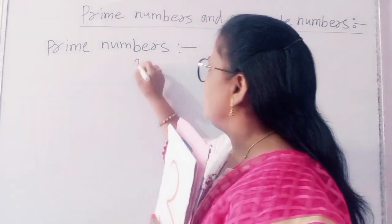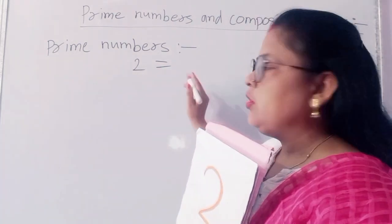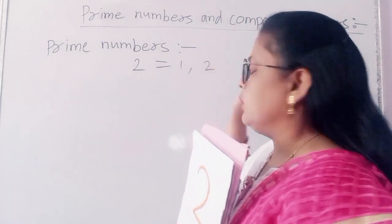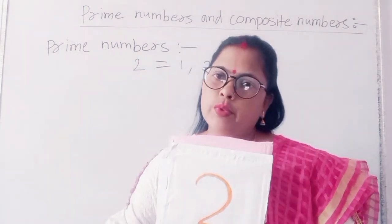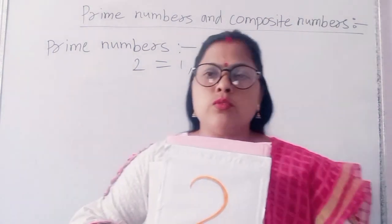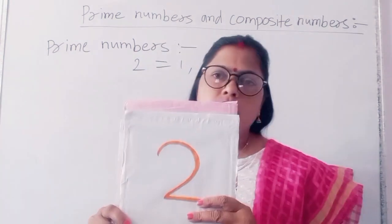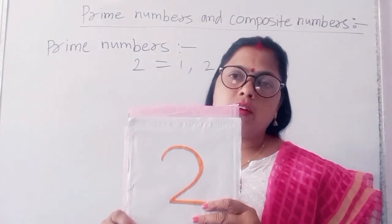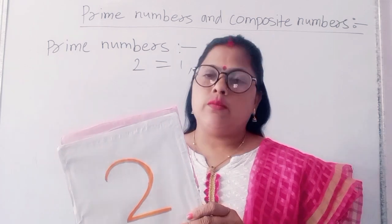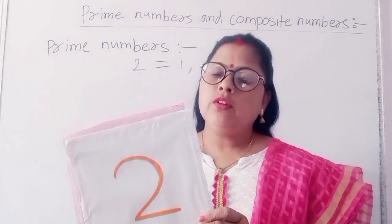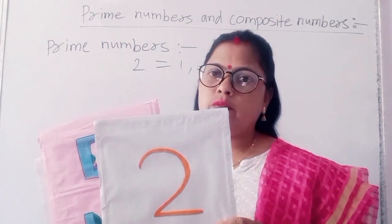The factor of 2 is 1 and 2. So 2 is a prime number. It is also the smallest prime number because it has only 2 factors and it is the smallest such number.